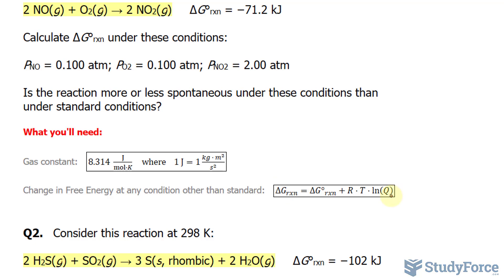We have most of this information. Notice that the question gives us delta G for the reaction at standard. It's negative 71.2. We'll plug that into there eventually.